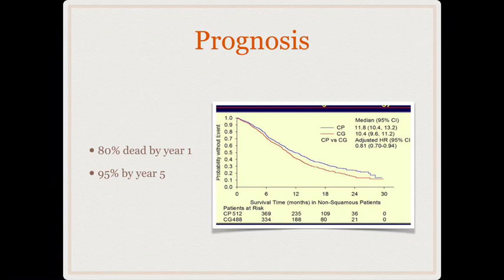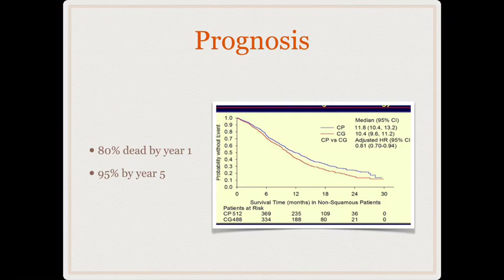The solution does not lie in treatment but in prevention of the disease. We prevent lung cancers by decreasing smoking. It is our responsibility to advise every patient who visits us — whether for inguinal hernia, diabetes, hypertension, or any condition — to take a smoking history and advise smoking cessation. That is how we decrease mortality from lung cancers.